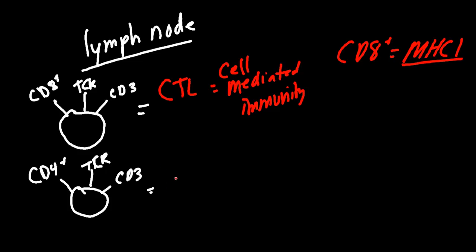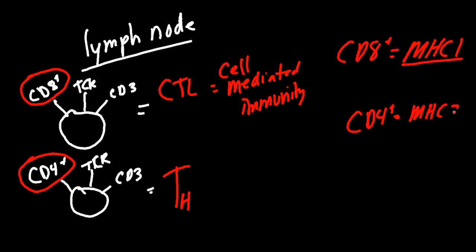T helper cells are CD4 positive. CD4 always binds MHC2, which is found on antigen presenting cells like dendritic cells. Dendritic cells grab extracellular antigen via phagocytosis, chop it up, and present it on MHC2. The CD4 binding site comes along and binds to MHC2 — if the antigen being presented is foreign, the T helper cell responds.